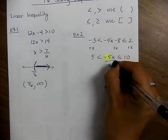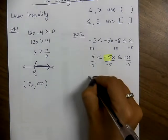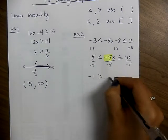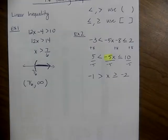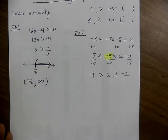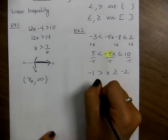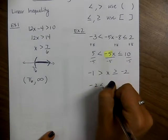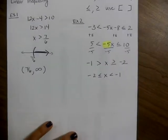When we divide by negative 5 everywhere, we get negative 1 is greater than x, which is greater than or equal to negative 2. That statement doesn't quite make sense as written — we always read smallest on the left to largest on the right. So I'll reorder this: negative 2 is less than or equal to x, which is less than negative 1.